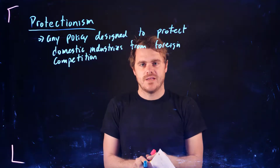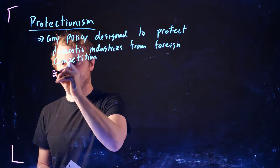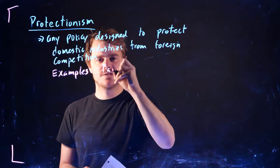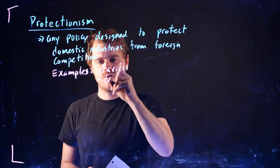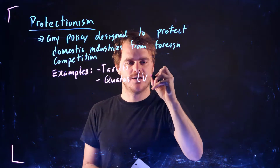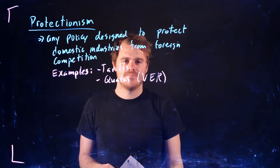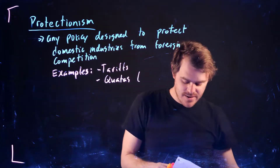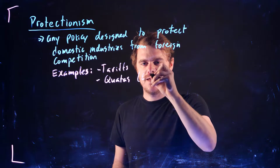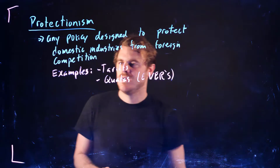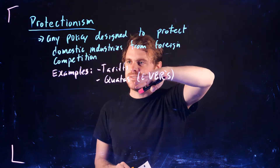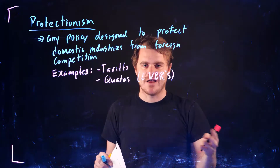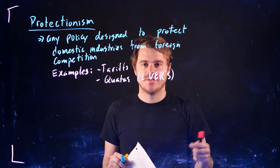For example, the examples we're going to concentrate on in this module are tariffs and quotas, or voluntary export restrictions (VERs). These are the two kinds of protectionist policies we're going to discuss in the context of these trade patterns and how these policies are going to affect the domestic markets.